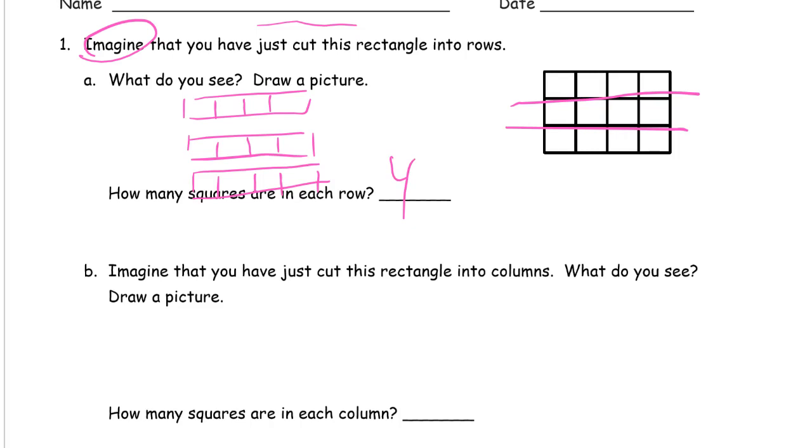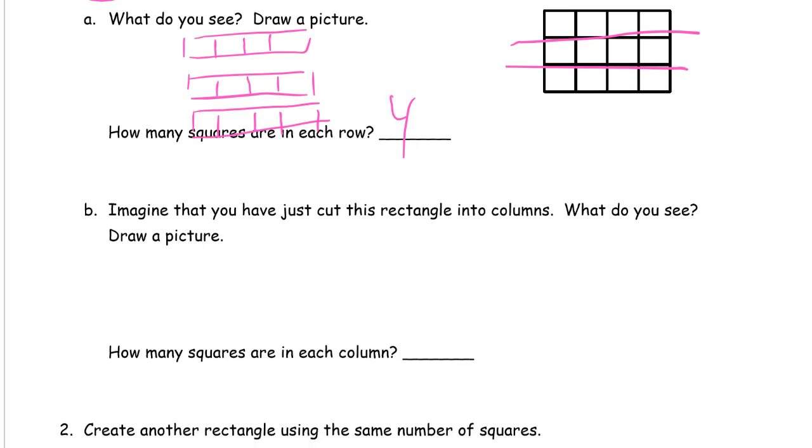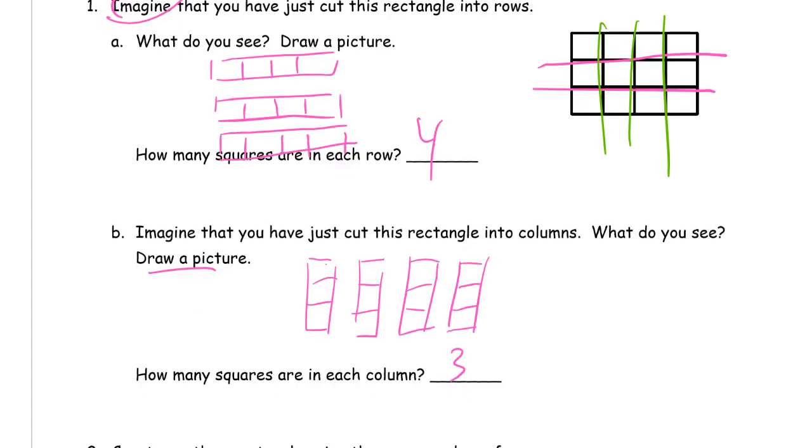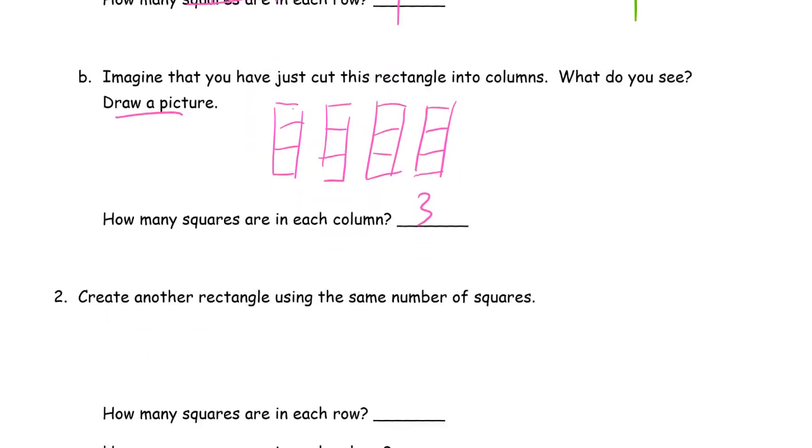Imagine I've just cut it into columns. What would I see? Well, for columns, it would be cut like this. So I'm going to see... You have to draw this picture, too. It says, draw a picture. So I'm going to have a strip of 3. And then I'm going to have 4 of these strips of 3. How many squares are in each column? There's 3 in each column. And this has just worked. It's more work on columns and rows. You really just can't get enough of it.